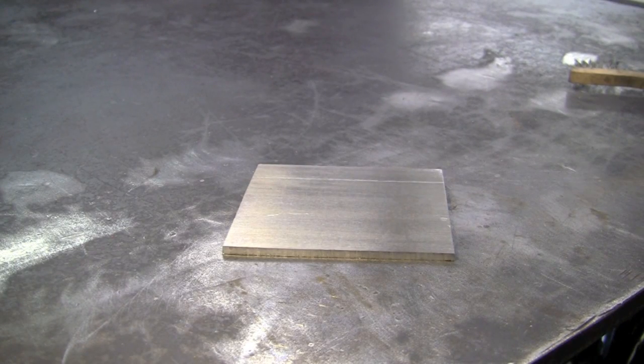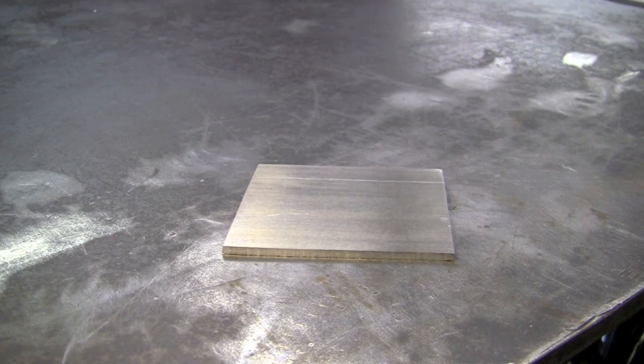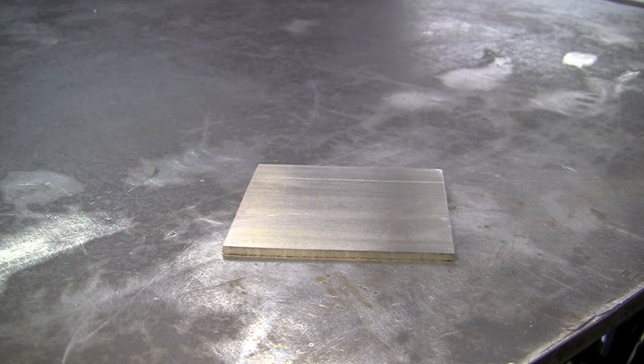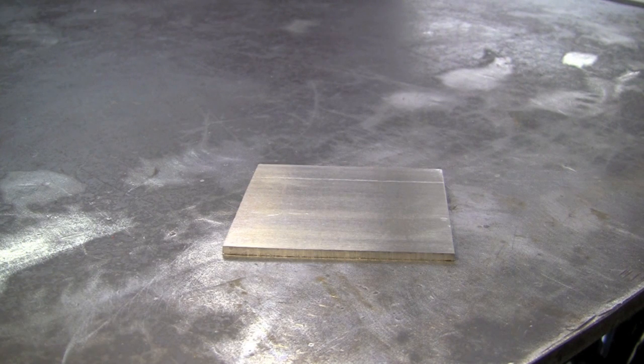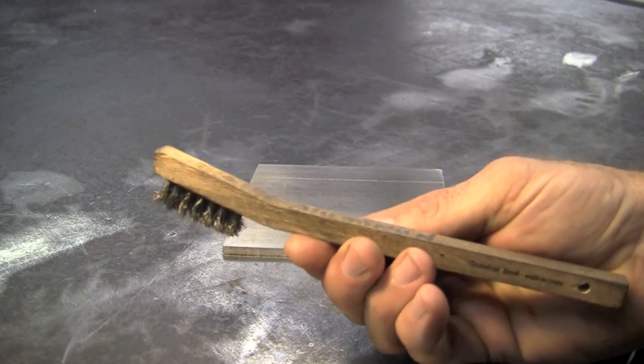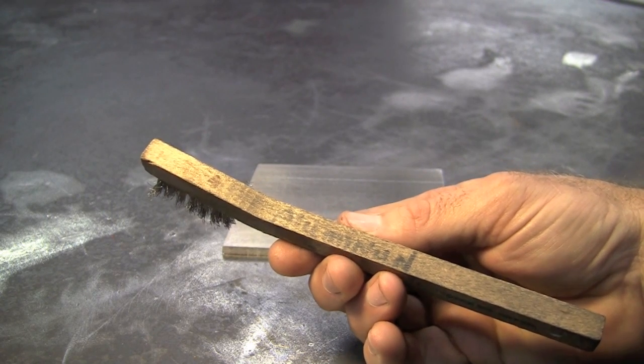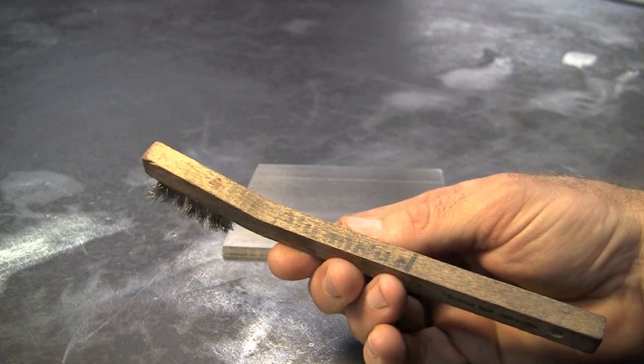The next thing you want to be concerned with is a mechanical clean. Now this piece of material is brand new straight from the mill so we just really need to get the oily residue off, but if I was trying to obtain a very good weld then I would take a stainless steel brush and this one's labeled for just aluminum and you want to only use it on aluminum so you don't cross contaminate.